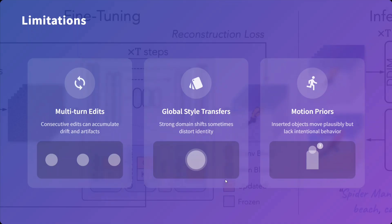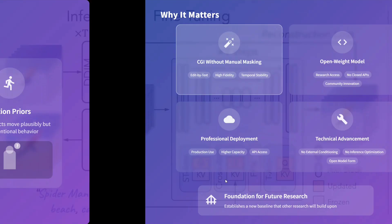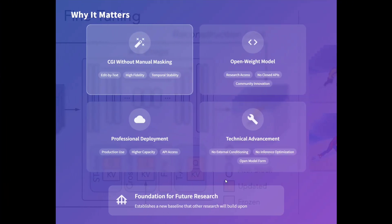We were just testing it out and it was not able to edit multiple things in the same prompt, as we saw. Why does it matter? CGI without manual masking — that's for true. Open weights, professional deployment, technical advancement, and it's a foundation for future research. Such a model can be dangerous for society but also of great help, so be wise while using it. Do test out the model — the model size is not that huge — and let me know in the comments how you feel about it. Thank you so much.